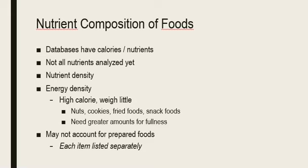Nutrient databases can be used to see the nutrient density and energy density associated with each food. Energy density is the amount of calories per gram of food. Energy dense foods are those that weigh very little but have a high calorie level — examples include nuts, cookies, fried foods, and snack foods. To feel full from these foods, you have to consume a lot of them, but that's a bad idea because they have a lot of calories in a small serving. Low energy dense foods include lettuce, fruits, vegetables, and items with high water content — these help you feel fuller quicker without adding high calorie content.